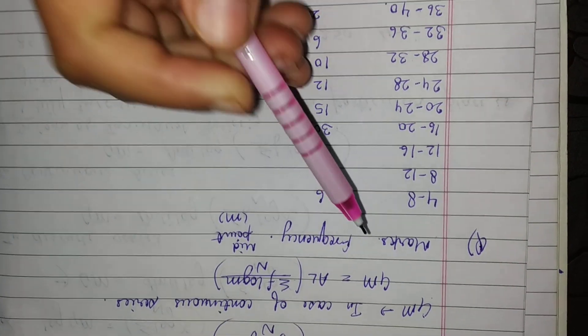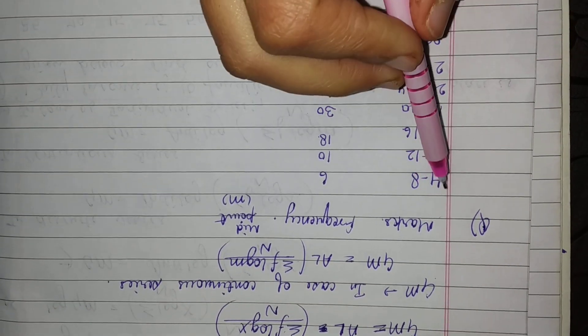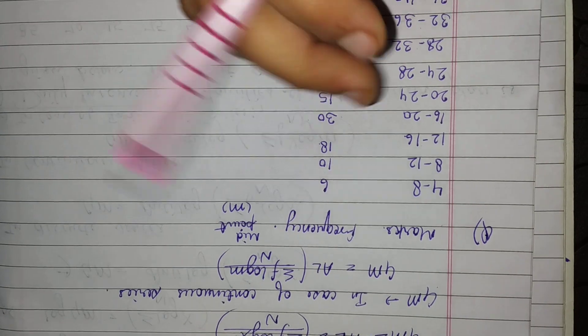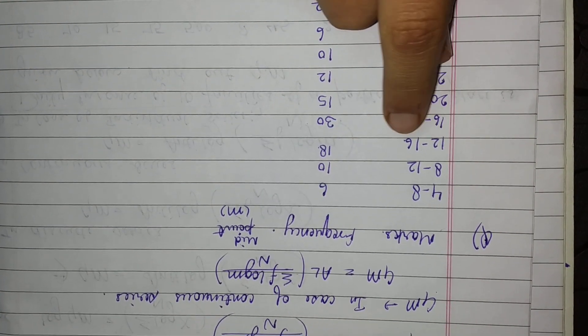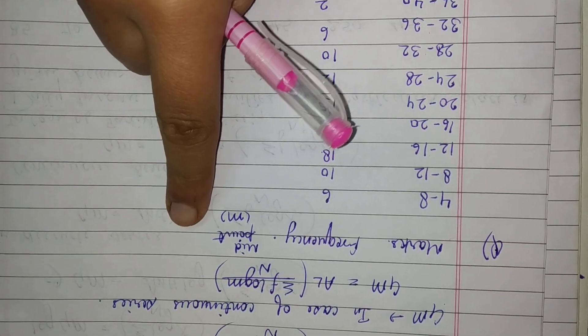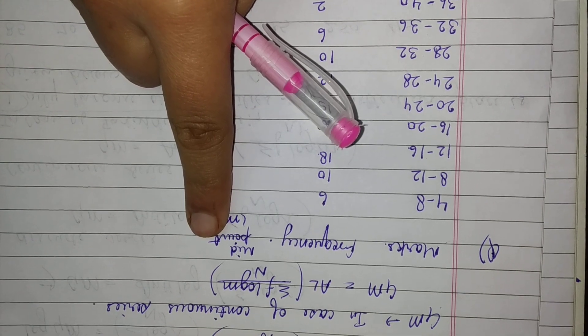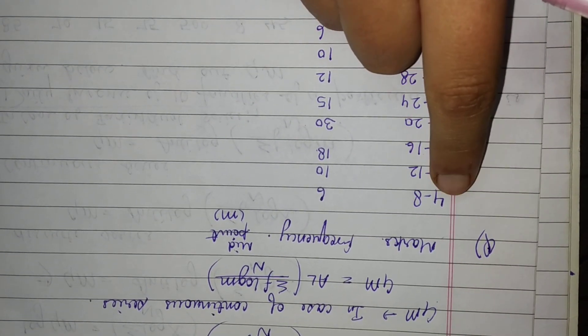The gap between 4 to 8 is 4, 8 to 12 is 4, 12 to 16 is 4. From this range we will find the midpoint. To calculate midpoint, add the lower limit and upper limit, that is 4 plus 8 equals 12, and divide by 2.